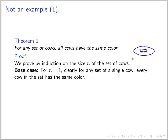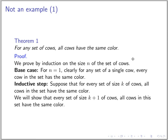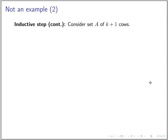Now let's do the inductive step. In this inductive step, we suppose that for every set of size K of cows, all cows in the set have the same color. This is P(K) — every set of size K, all cows in the set have the same color. We want to show that in a set of size K plus one, all the cows have the same color.